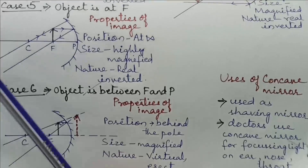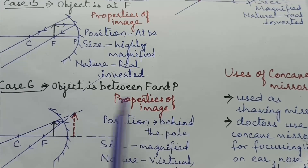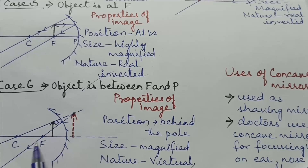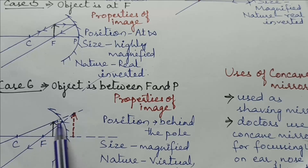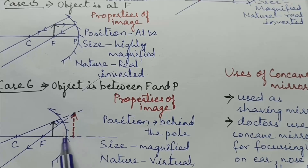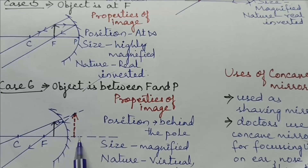Case 6: When the object is placed between focus and pole. The first ray coming parallel to principal axis after reflection passes through focus. The second ray passing through center of curvature retraces its path. If the two rays are extended in the backward direction they intersect at a point where the image is formed behind the mirror. The size of image is magnified and the nature of image is virtual and erect.